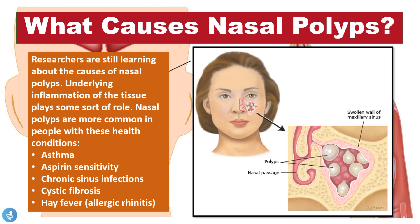Nasal polyps tend to be more common in people with certain health conditions. Patients who suffer from asthma, aspirin sensitivity, chronic sinus infections, cystic fibrosis, and hay fever — which is allergic rhinitis — are more susceptible. There is enough evidence suggesting that some underlying inflammatory condition may actually lead to the development of the disease.